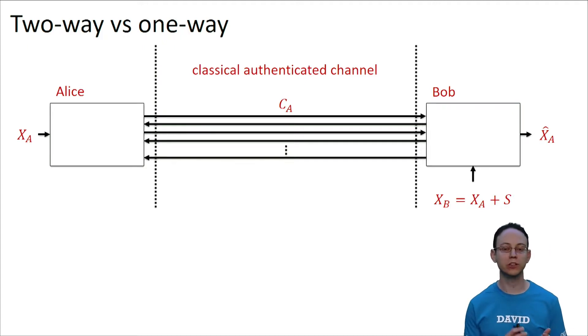Perhaps Alice sends some information to Bob, Bob processes that information and sends a message back to Alice, and they keep exchanging messages until some predefined condition is met. We call such a protocol a two-way or an interactive protocol.